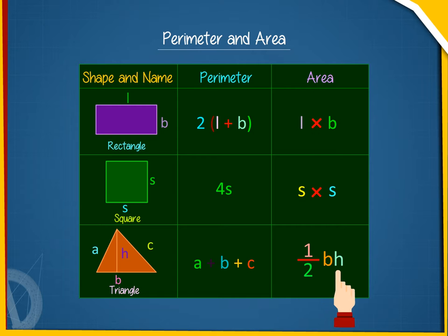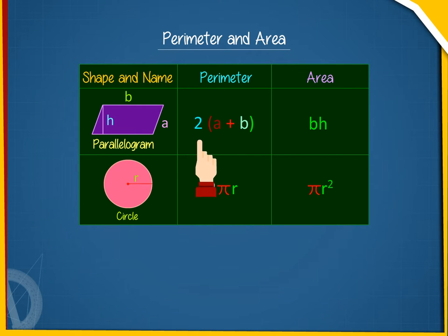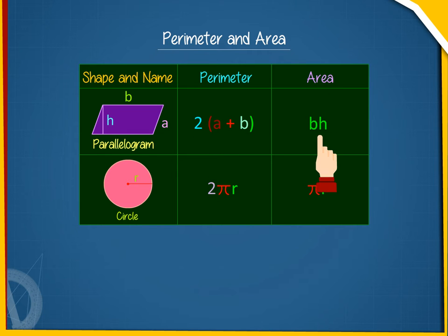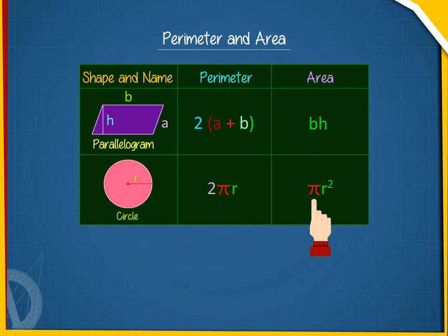Parallelogram: parameter is 2 into (A plus B), area is B times H. Circle: parameter is 2 Pi R, area is Pi R squared.